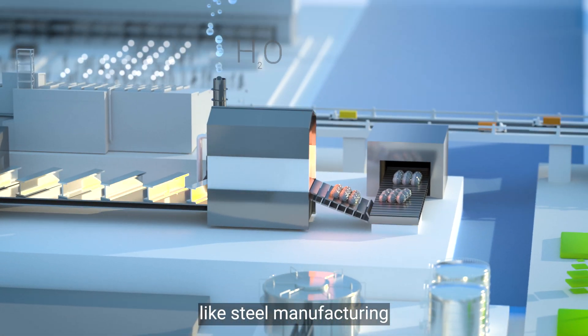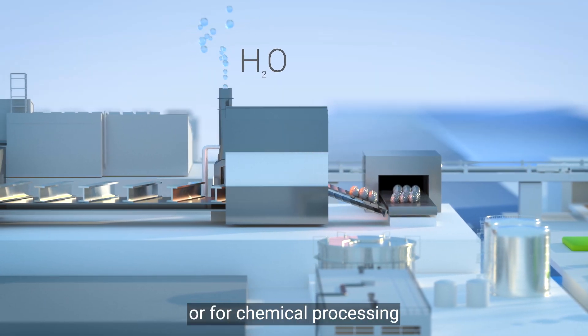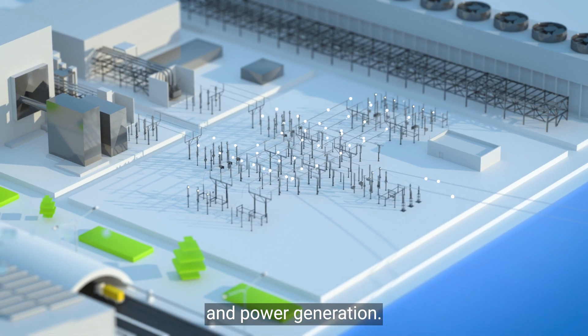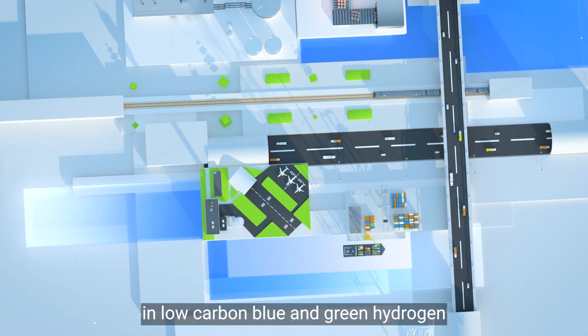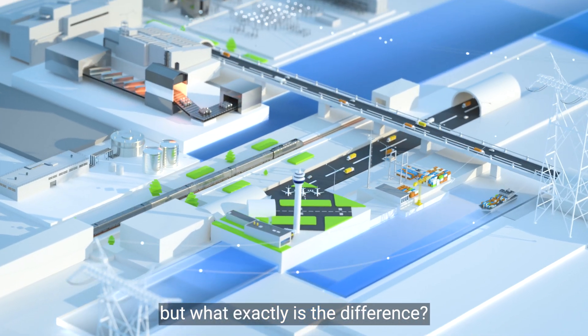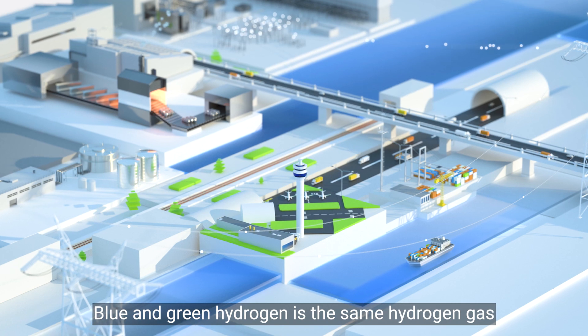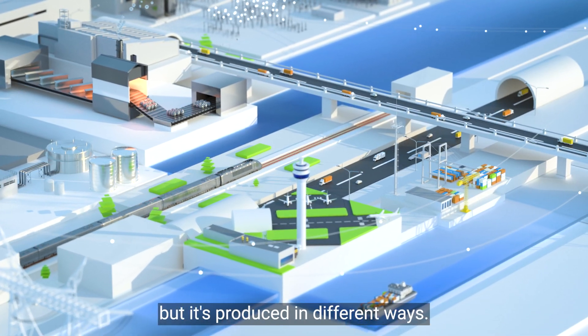For heavy industries that need intense heat like steel manufacturing, or for chemical processing and power generation, BP is investing heavily in low carbon blue and green hydrogen. But what exactly is the difference? Blue and green hydrogen is the same hydrogen gas, but it's produced in different ways.